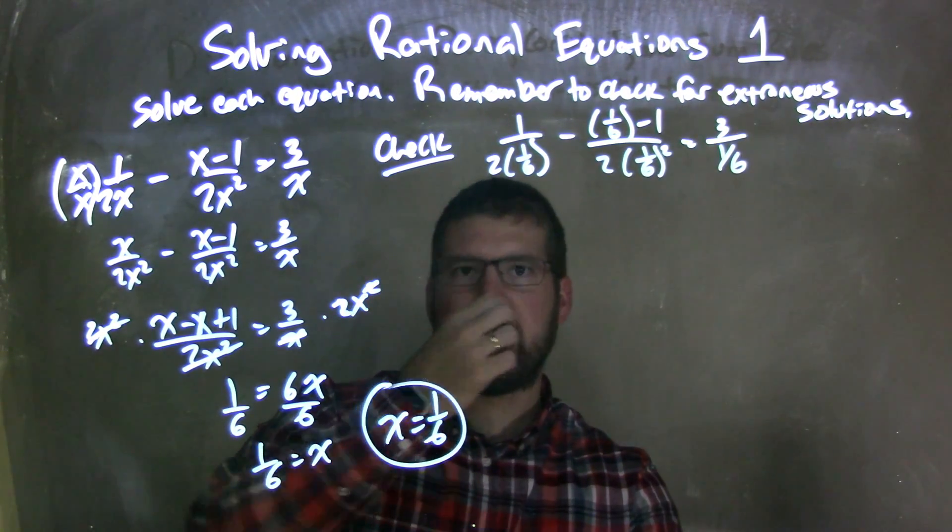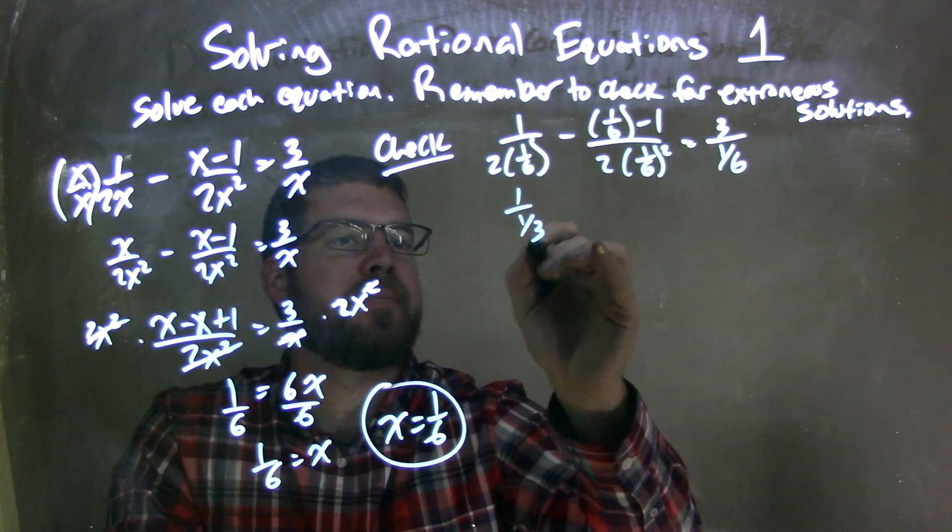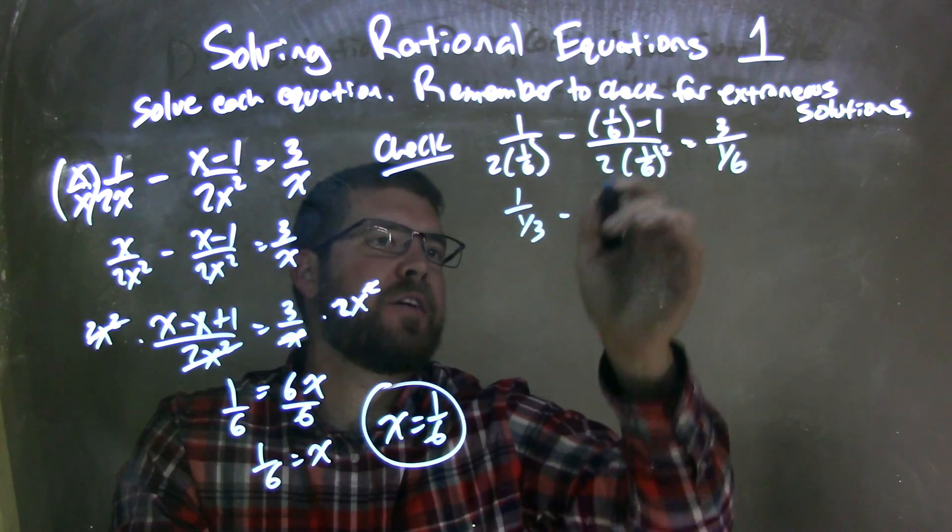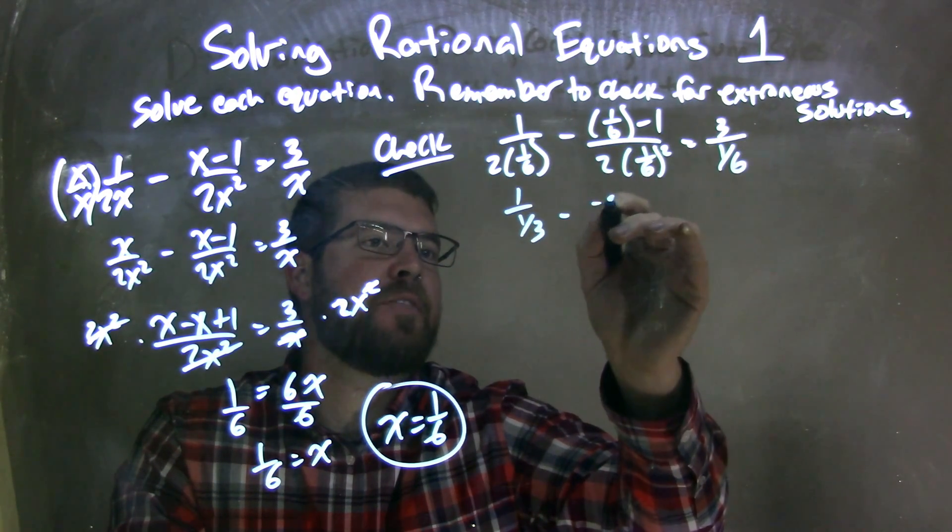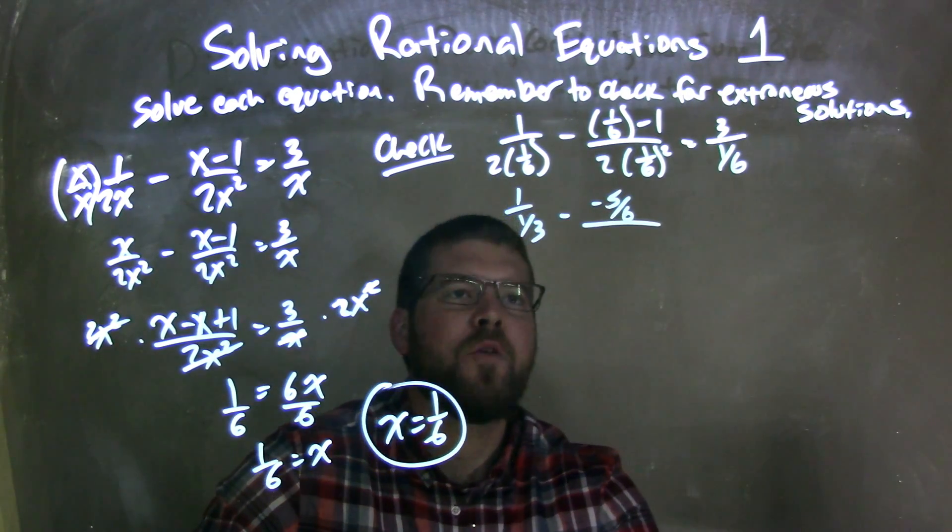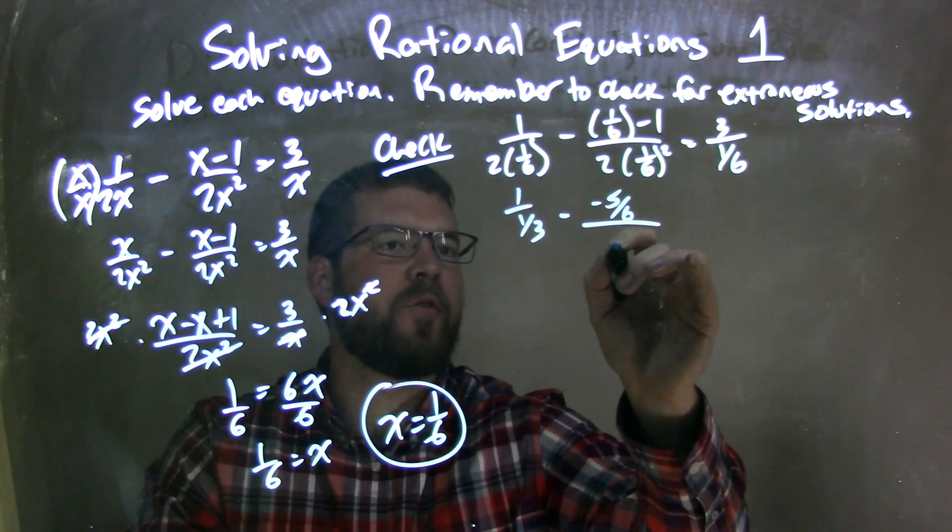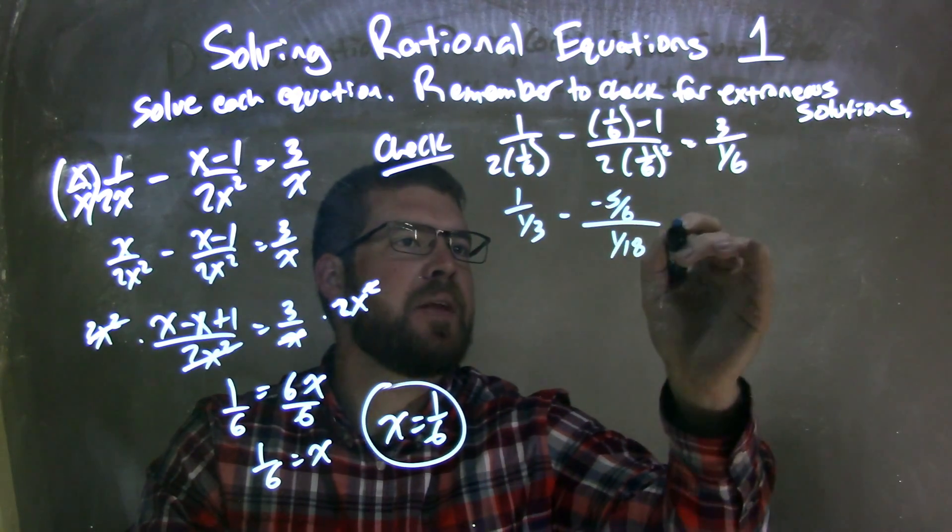So let's go check that. Well, 2 times 1 sixth is 1 third, so we have 1 over 1 third. Minus here, 1 sixth minus 1 is a negative 5 sixths over, well, 1 sixth squared is 1 over 36, and times it by 2 is 1 over 18. So we have 1 over 18 right there.